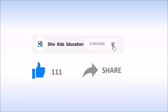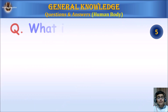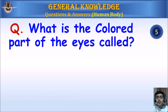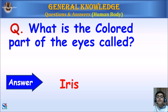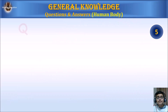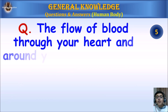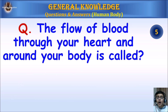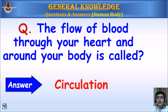What is the colored part of the eyes called? Answer: Iris. The flow of blood through your heart and around your body is called? Answer: Circulation.